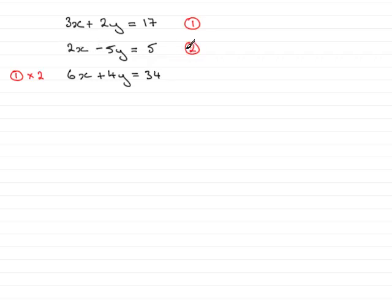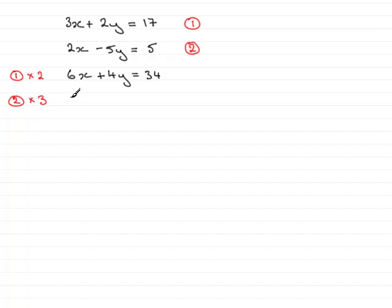Now I look at the second equation and I want to bring this 2x up to a 6x as well. I can do that by multiplying both sides of equation 2 by 3. So what we get is 3 lots of 2x, which is 6x; 3 lots of minus 5y, which is minus 15y; and that equals 3 lots of 5, which is 15.